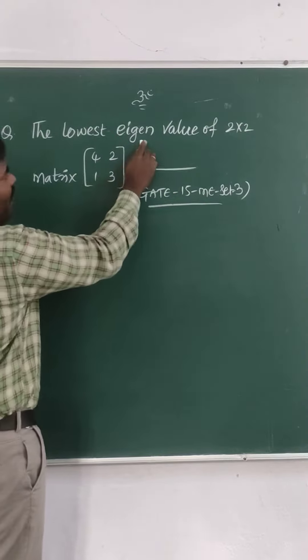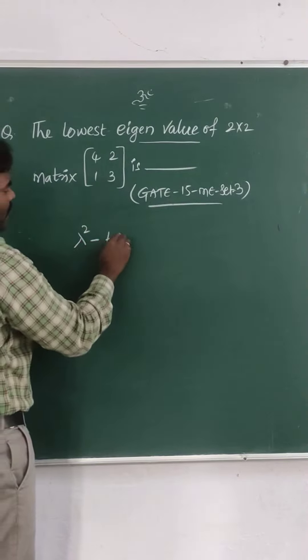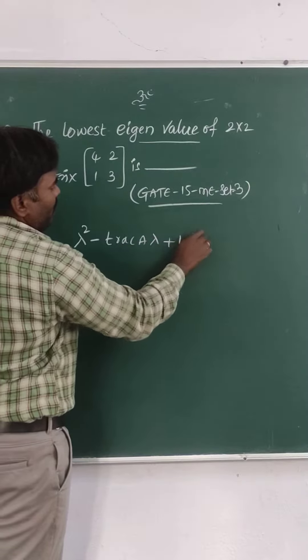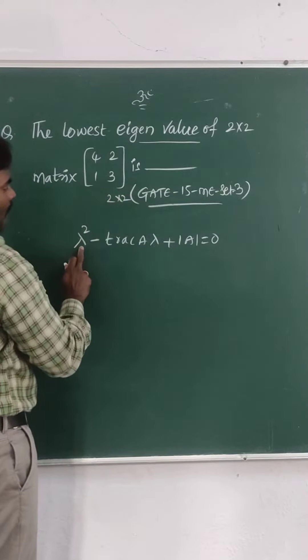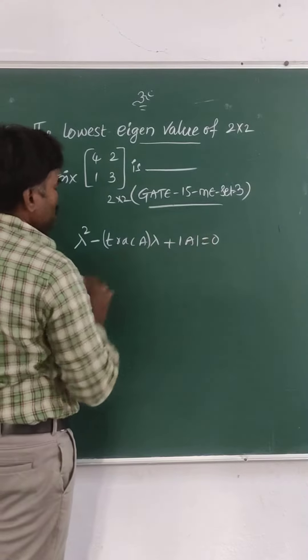So, how to find eigenvalues for a 2 by 2 matrix? We have a formula: lambda square minus trace of A into lambda plus determinant A is equal to 0. I repeat again, for 2 by 2 matrix: lambda square minus trace of A into lambda plus det A is equal to 0.